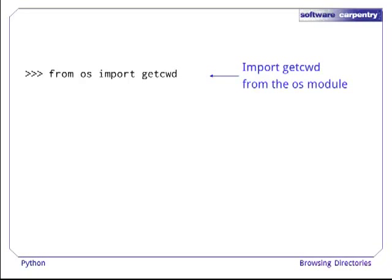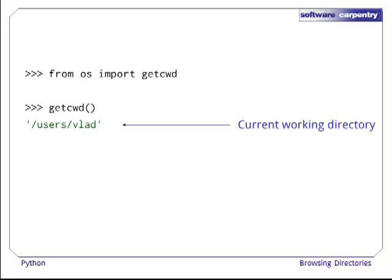As a simple example, we'll start by accessing the current directory. First, we import the getcwd function from the OS module. If we then run getcwd, Python will show us the current working directory. That is, the directory in which Python was started.